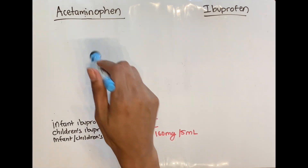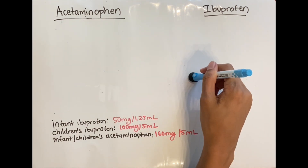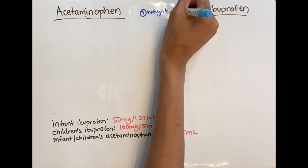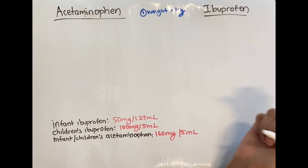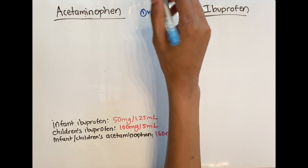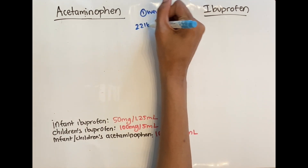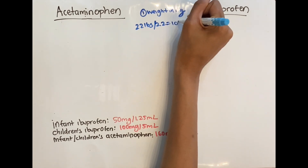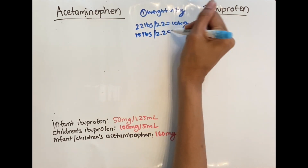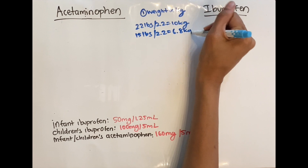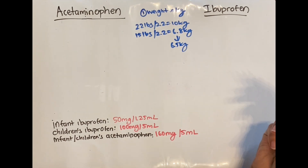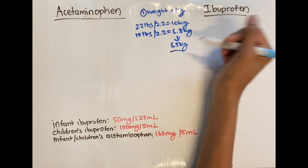Now we're going to do some examples — get a pen and paper if you want to follow along. The first thing we need to know for any child is their weight in kilograms. In the United States we do everything by pounds, so to convert pounds to kilograms, remember the number 2.2 — for every pound, divide by 2.2. For example, if your child is 22 pounds, divide by 2.2 and that's 10 kilograms. If your child is 15 pounds, divide by 2.2, that's approximately 6.8 kilograms. For easier calculation, round down — rounding up can risk overdosing. So we'll use 6.5 kilos and 10 kilos.